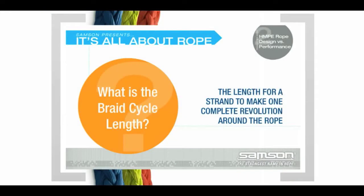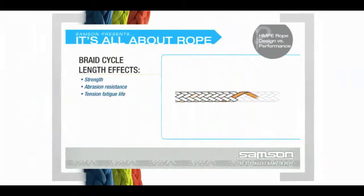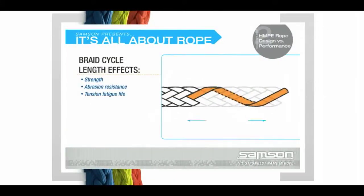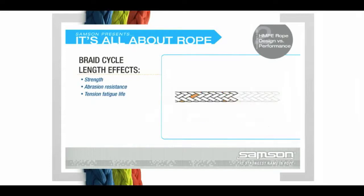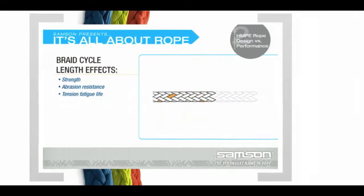Braid cycle length is the length, as measured along the rope's axis, for a strand to make one complete revolution around the rope. From extensive testing, we know that the braid cycle length is critical to the service life of the rope. It has a significant effect on the strength, abrasion resistance, and the tension fatigue life of the finished rope.